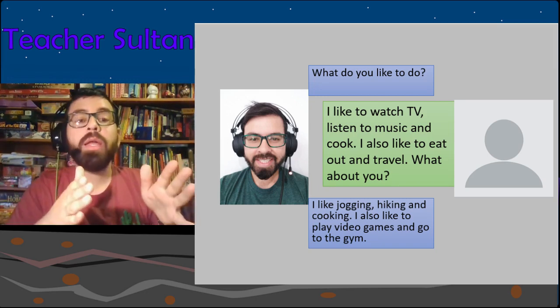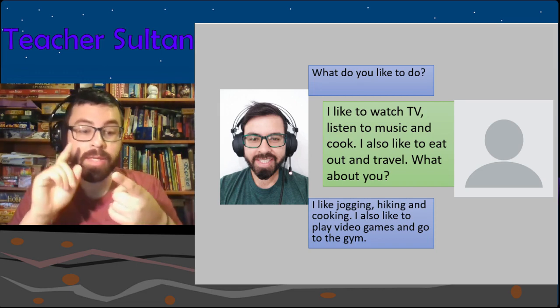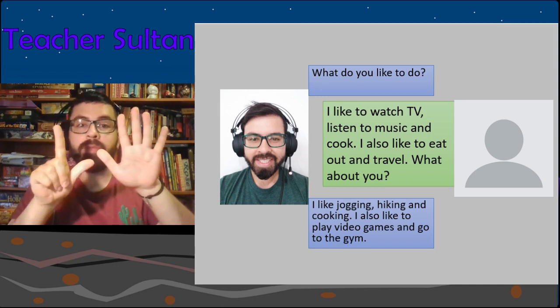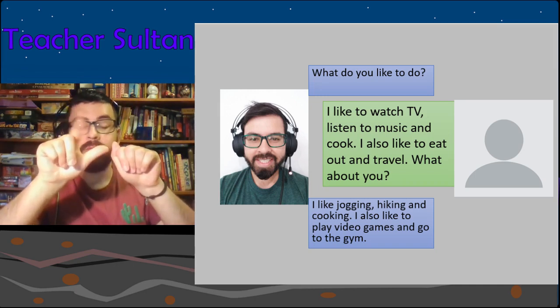'I also like to eat out and travel. What about you?' 'I like jogging, hiking and cooking. I also like to play video games and go to the gym.' If you like many things, you can split into two sentences, or make one sentence: 'I like traveling, swimming, running, going to the gym, going to cafes and playing video games.' Don't forget the 'and' before the last item.